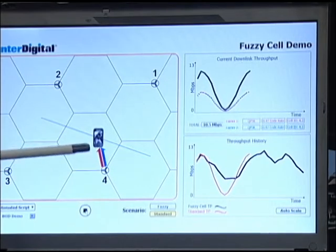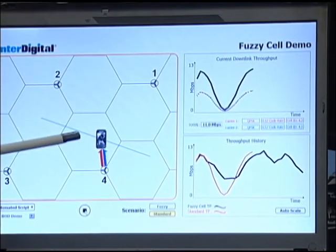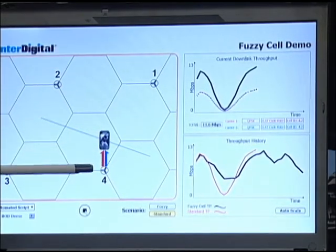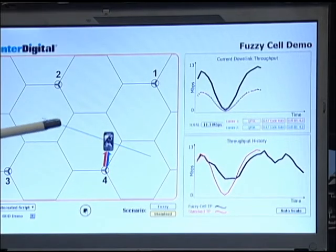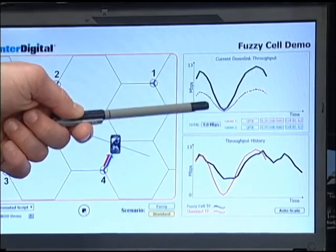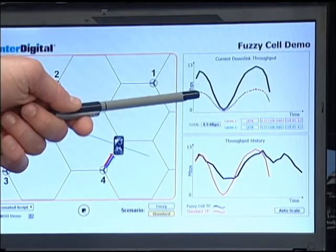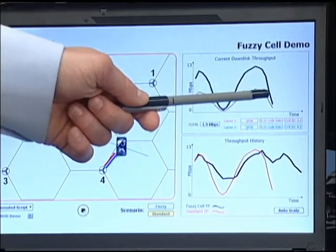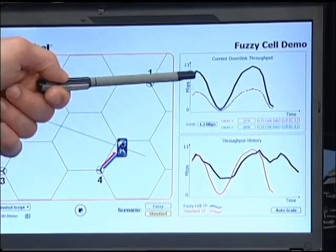In the standard topology both beams have the exact same power and the exact same beam patterns, and we will see the exact same throughput for each of the two carriers. That's what's shown in the current download throughput. We see each individual contribution from each of the two component carriers and then we see the aggregate sum.